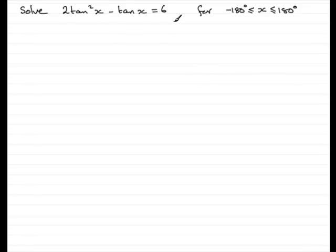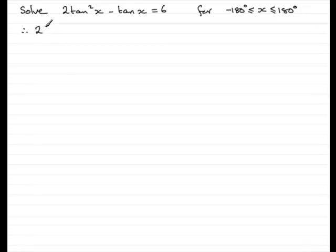When I get a trig equation, I always look to see if it's in the same trig function with the same angle — and this one is. I notice it's a tan²x, making it a quadratic equation in tan x. To factorize it, I need to make it equal to zero, so subtracting 6 from both sides gives 2tan²x minus tan x minus 6 equals 0.